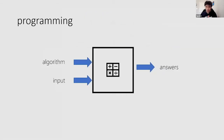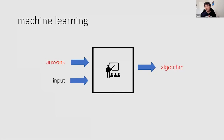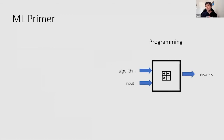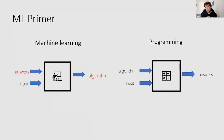When we think about programming, traditional programming is about this: you figure out an algorithm, you have input, and it spits out the answers. In machine learning, it's flipped the other way around — you have the same input but you also have the answers, meaning the desired output, and you train the machine to build an algorithm for you. In traditional programming you have your algorithm, your input, and your answers. In the machine learning world, you have answers and input and it spits out an algorithm.